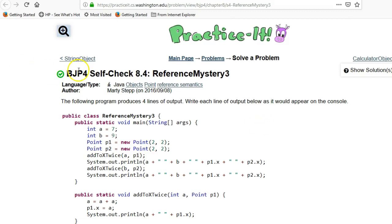This video is going over the Building Java Programs book, Chapter 8, which is about classes, and we've got self-check 4 called Reference Mystery. And we're doing this in the Practice It website, which is a free website that accompanies the book.